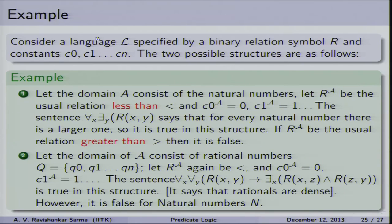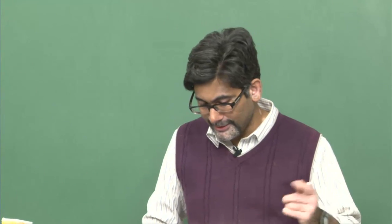Now consider the domain as the rational numbers Q, R^A as the less-than relation, with constants c0^A = 0 and c1^A = 1. The sentence ∀x ∀y R(x,y) → ∃z (R(x,z) ∧ R(z,y)) is true in this structure — rationals are dense. However, the same formula is false with respect to natural numbers. So the same formula can be true in one domain and false in another.